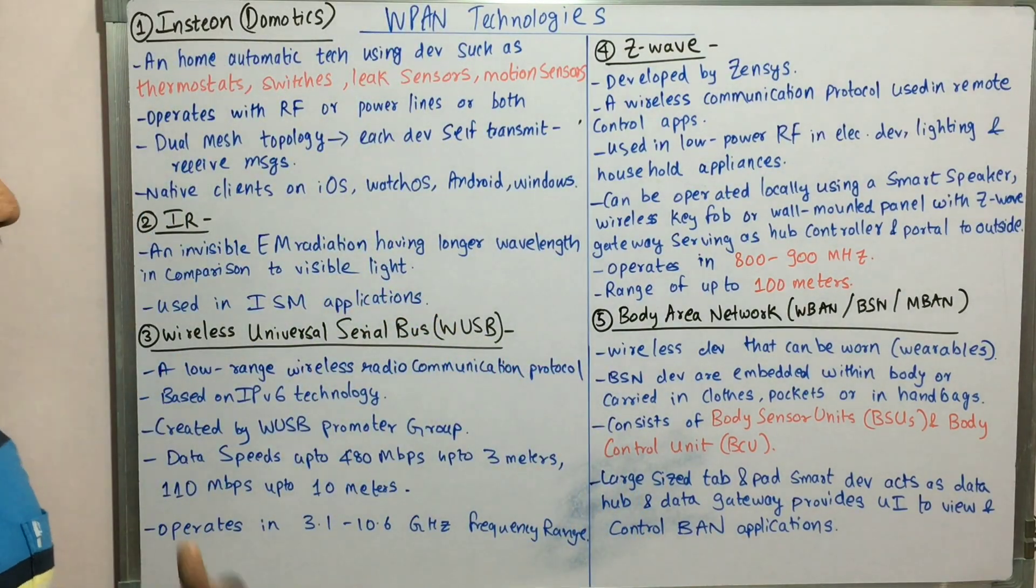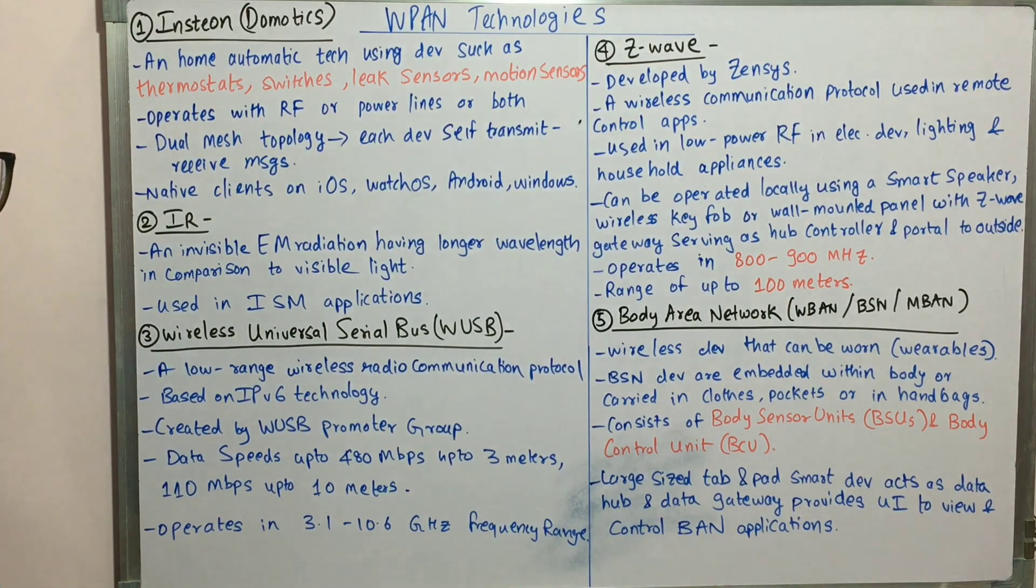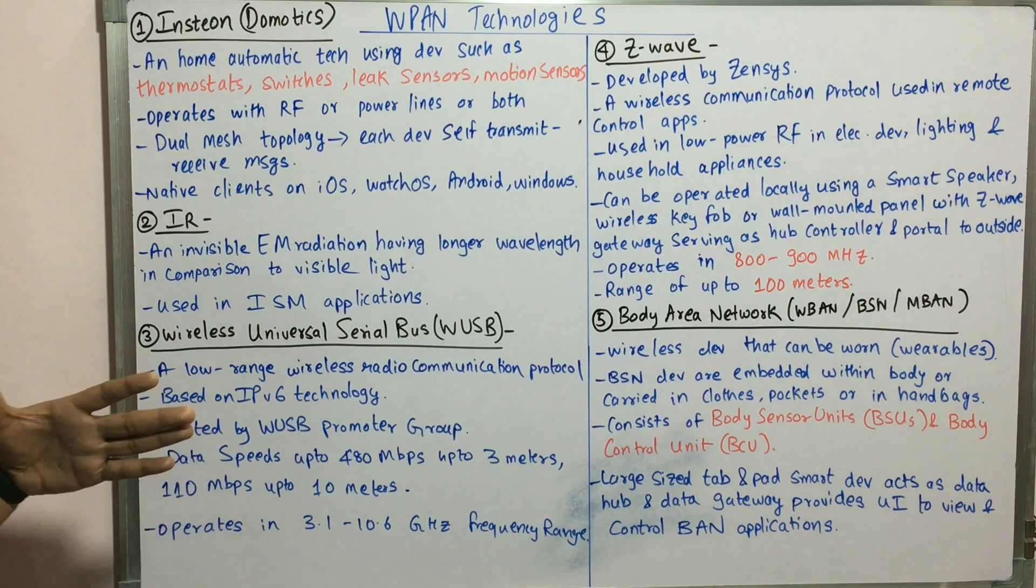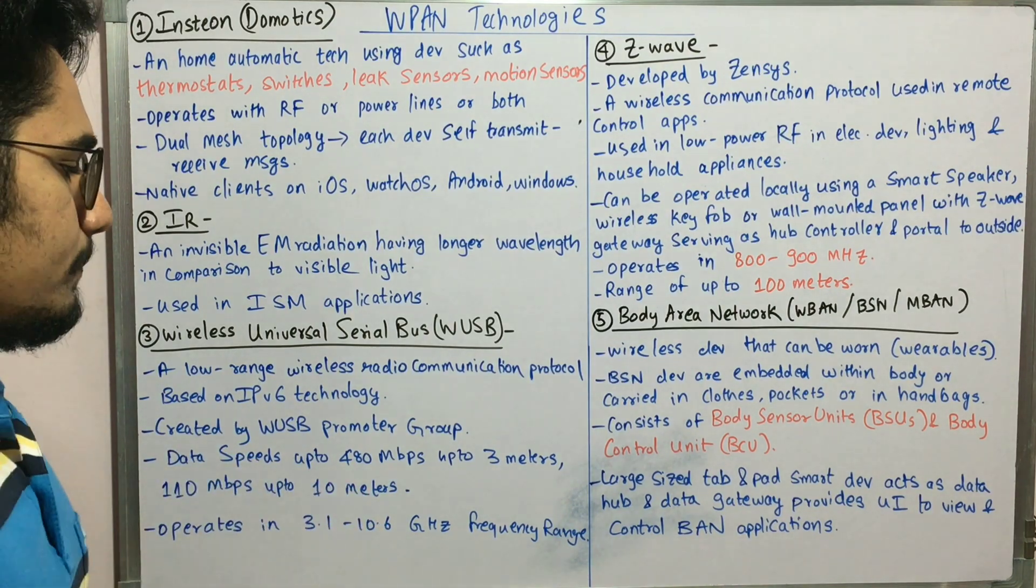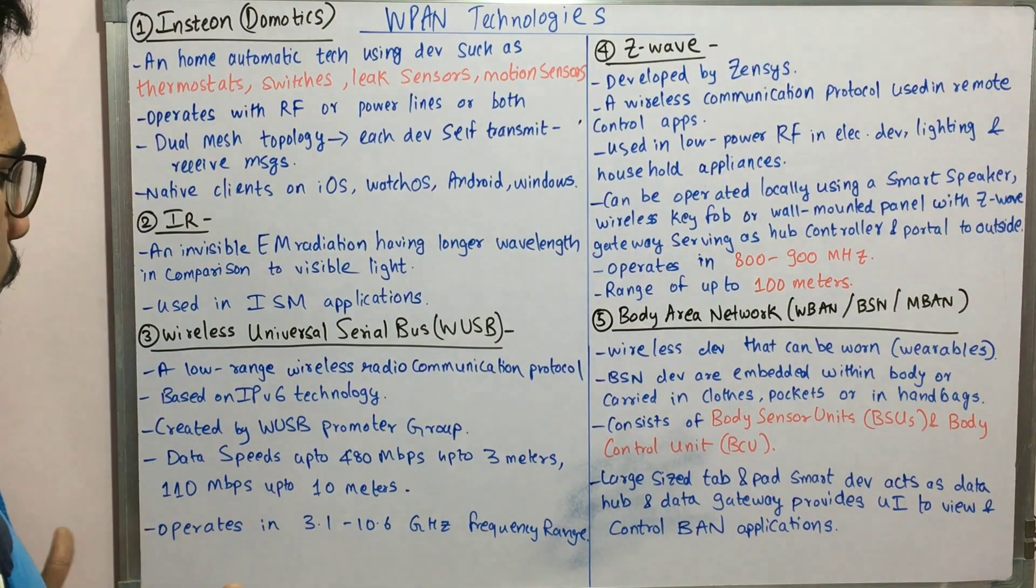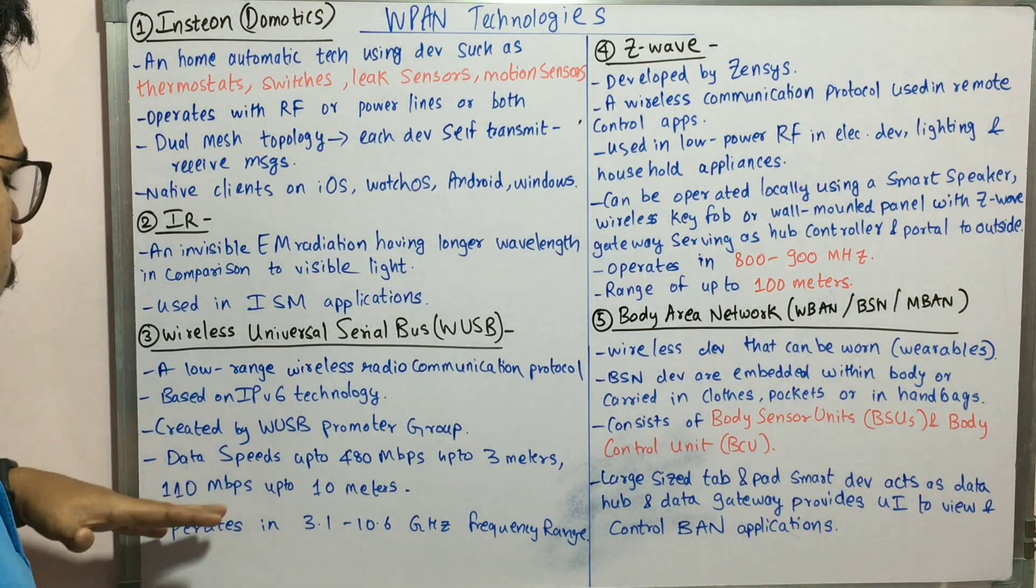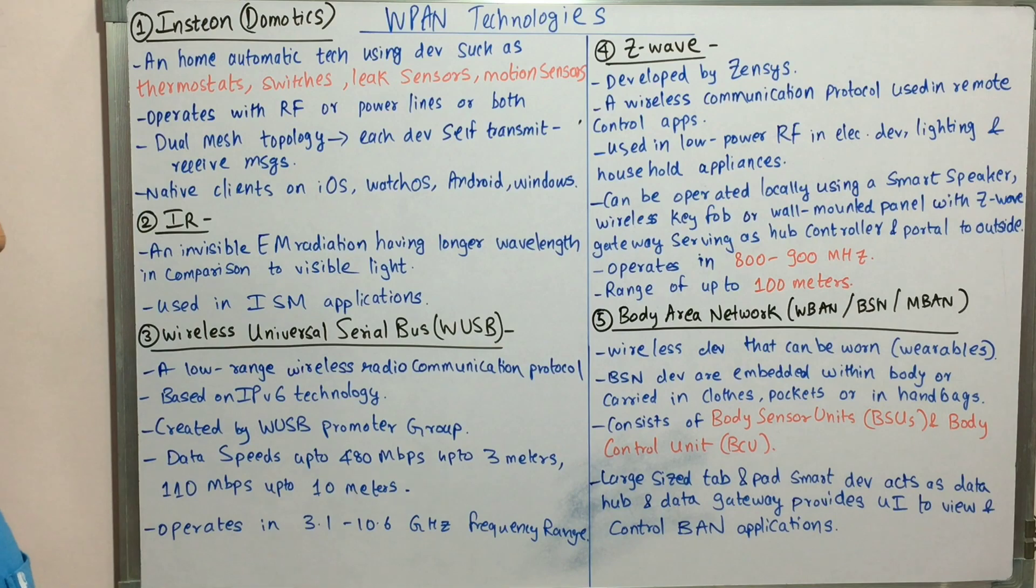It's based on IPv6, that is internet protocol version 6 technology, and it's created by the WUSB promoter group. Talking about data speeds, it's up to 480 Mbps up to 3 meters, and up to 110 Mbps for larger distances up to 10 meters. It operates in the 3.1 to 10.6 gigahertz frequency range.